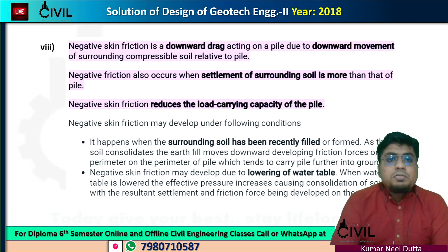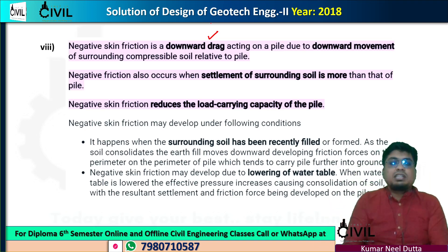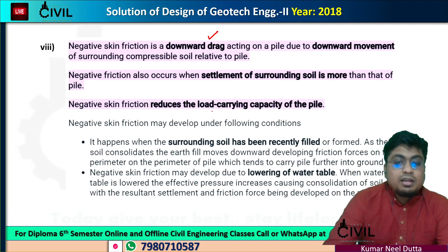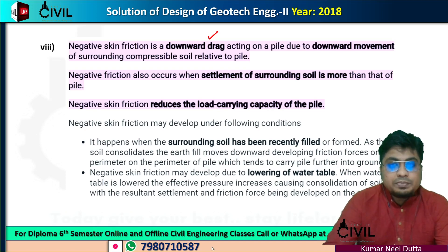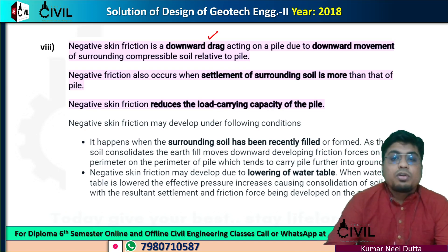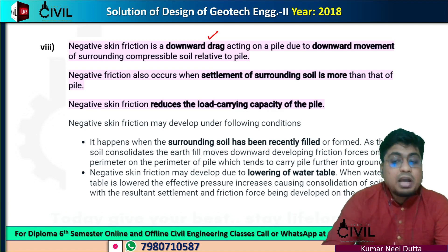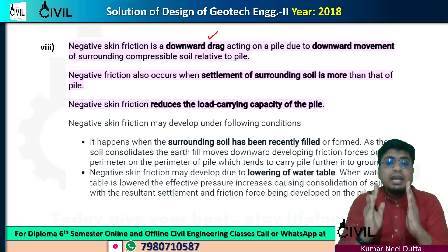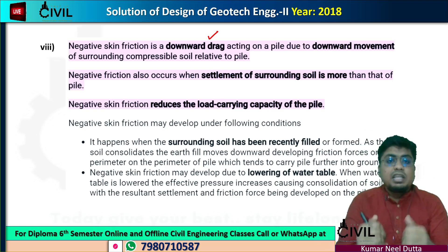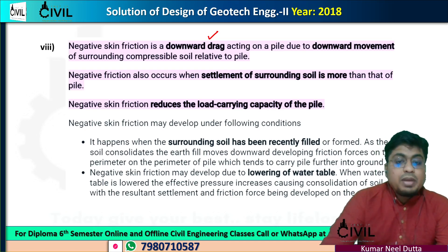What does negative skin friction mean? It is a downward drag on the pile due to the downward movement of the surrounding compressible soil relative to the pile. Negative skin friction also occurs when the settlement of the surrounding soil is more than that of the pile. It reduces the load-carrying capacity of the pile.